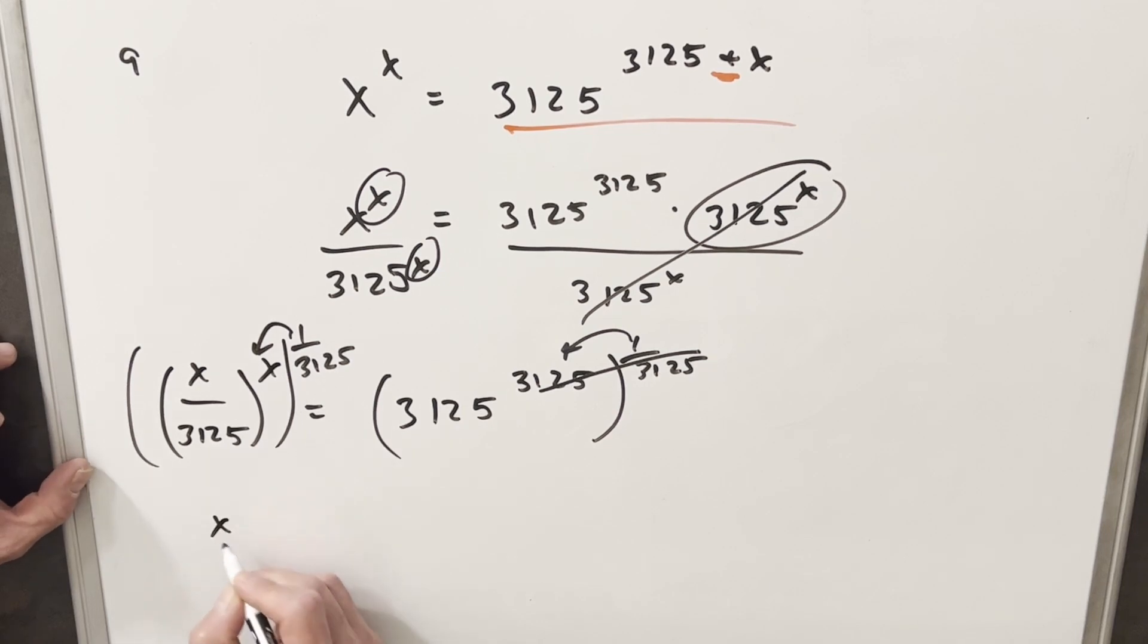So when I distribute that in on the left side, we're going to have x over 3125 to the x to the 3125. And that's just going to equal 3125.